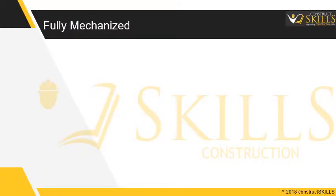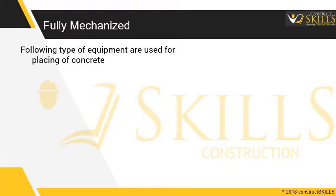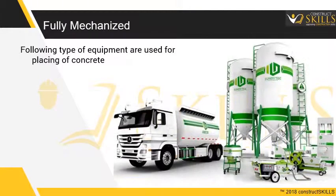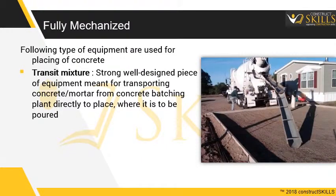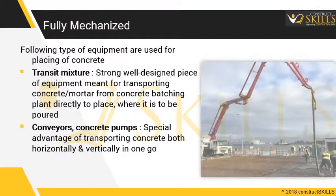The fully mechanized method is rapidly increasing because of equipment availability on rent from most ready-mix vendors. Types of equipment used for placing concrete include transit mixers, concrete pumps, and cranes. A transit mixer is a truck with a rotating mixing drum, meant for transporting concrete from a concrete batching plant directly to the place where it is to be poured.